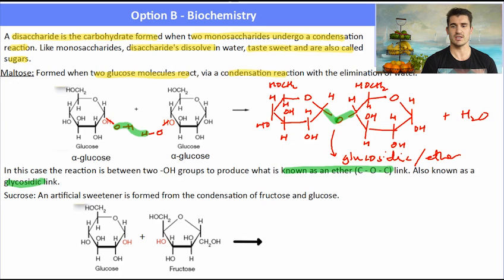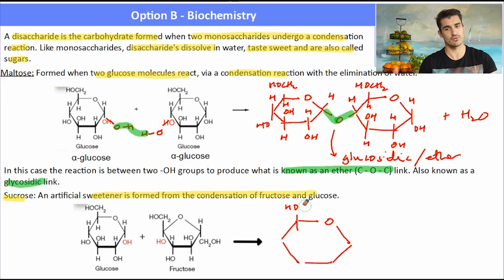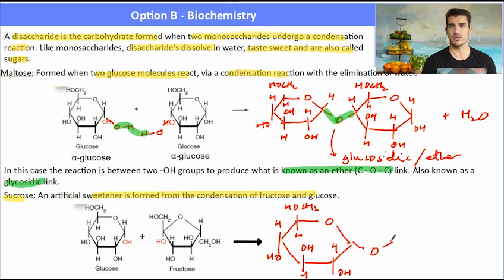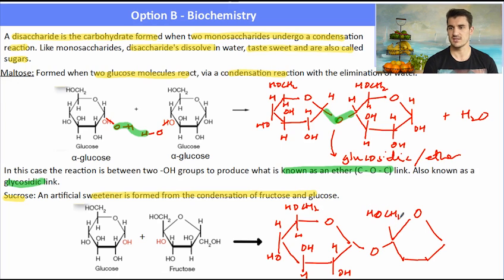Sucrose is an artificial sweetener formed from the condensation of fructose and glucose. The same procedure will happen: two of those OH groups — one from the glucose, one from the fructose — will react together in a condensation reaction, eliminating water, forming that glycosidic bond between the glucose and the fructose to produce our disaccharide, which is sucrose. I've just got to look at the cyclic structures of glucose and fructose, join them together with my glycosidic link — my C-O-C — remembering that fructose is a five-membered ring where glucose is a six-membered ring, and not forgetting to put my water at the end to balance.